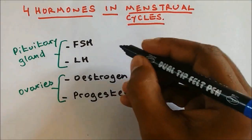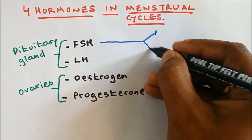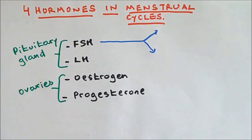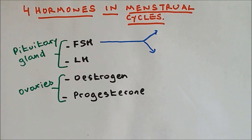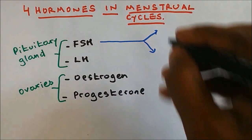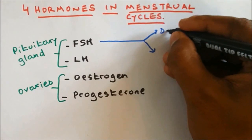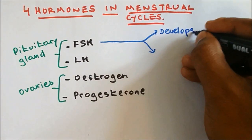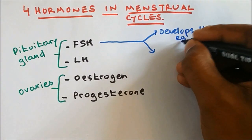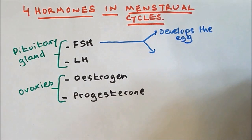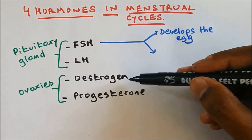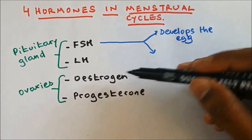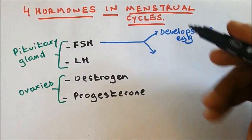FSH has two functions. The first function is to develop the egg, and it also causes the release of Oestrogen from the ovaries.